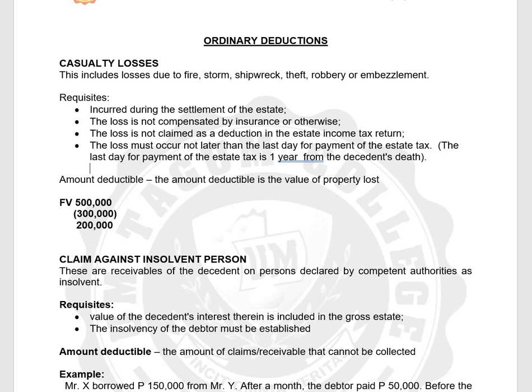We also need to establish that the debtor is truly insolvent — meaning total liabilities are greater than total assets, so assets are less than total liabilities. The amount deductible is the amount of the claim receivable that cannot be collected — the portion that is uncollectible.